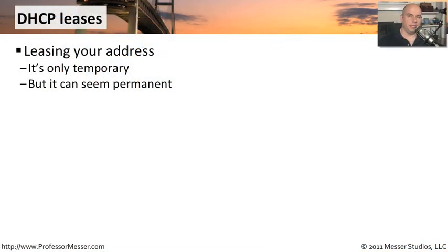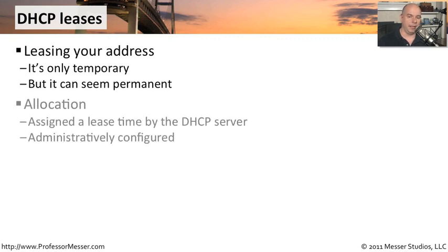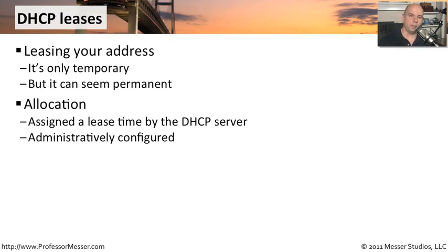One of the significant advantages to DHCP is the ability to lease an IP address. This is just like leasing an apartment or a house — it's a temporary thing where I'm getting an IP address from the DHCP server, but I'm going to give that IP address back eventually. It is something that's set up by the DHCP server as an allocation of addresses, and it times how long you're going to get that lease. It's all administratively configured inside the DHCP server, and you have complete control over that allocation process.